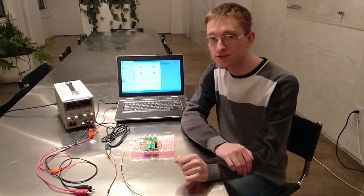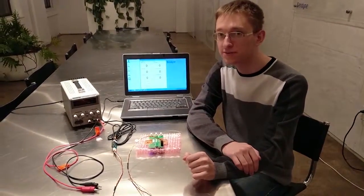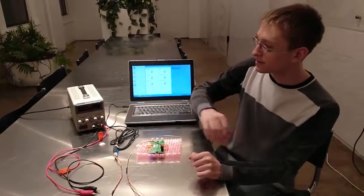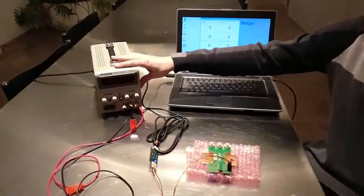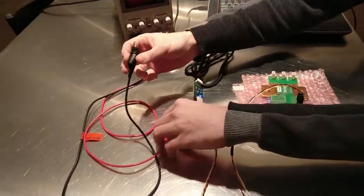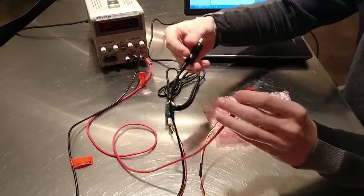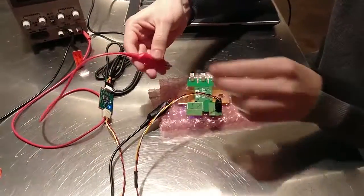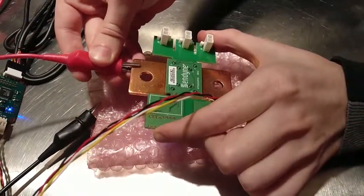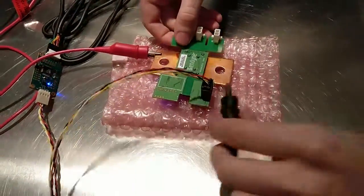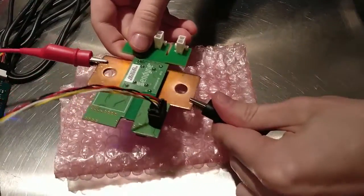Now that we have the SFP200 connected to the host, we'll demonstrate its current measurement functionality. We have our current source with positive and negative terminals. We connect the positive to the positive side of the shunt and the negative to the negative side of the shunt.